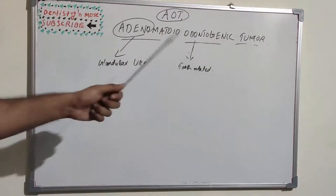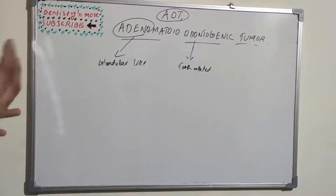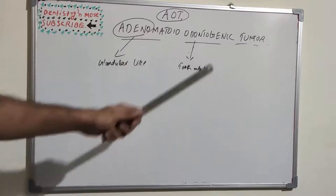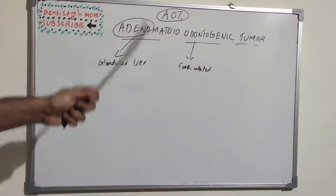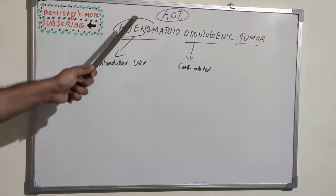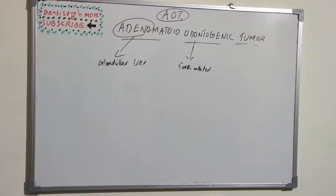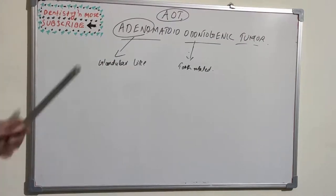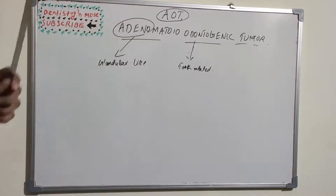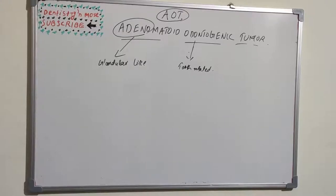'Adeno' means something related to glands. This tumor has a peculiar gland-like appearance or gland-like structures — that is why it is called Adenomatoid Odontogenic Tumor. Now let's get into the details of AOT.